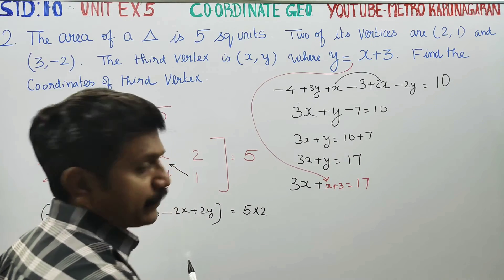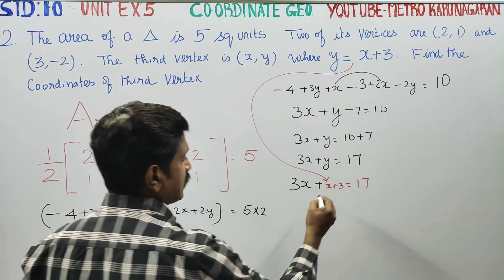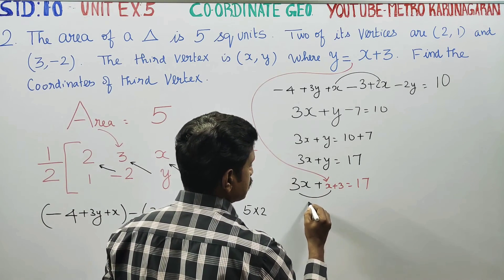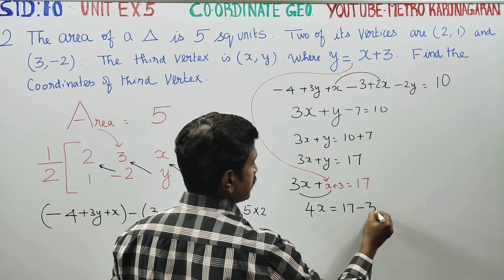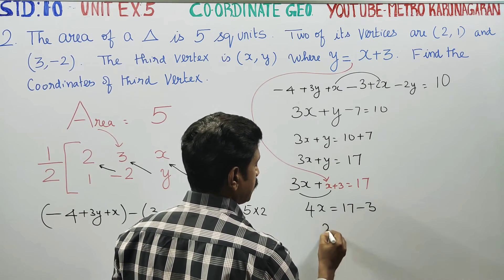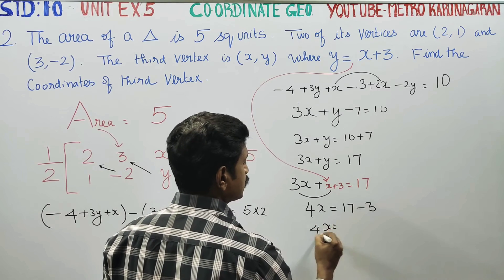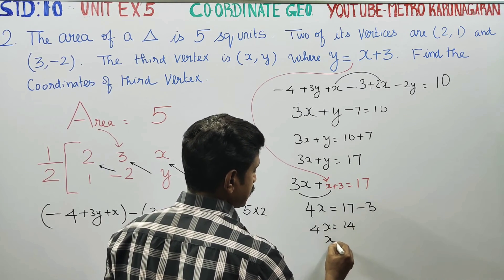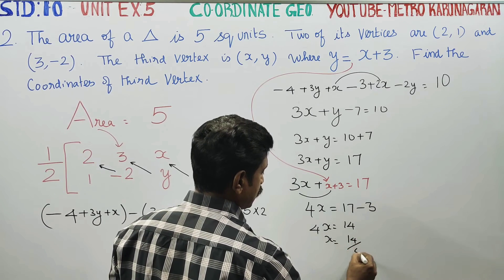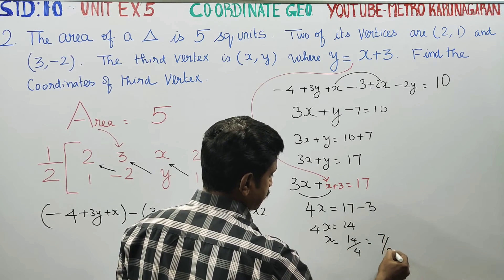3x plus x plus 3 is equal to 17. 4x is equal to 17 minus 3. Then x is equal to 14. x is equal to 14 by 4. Cancel by 2 to get 7 by 2.